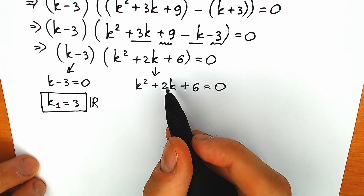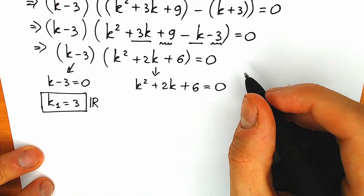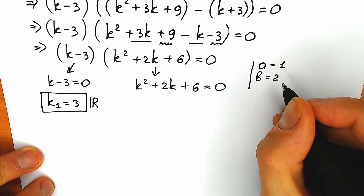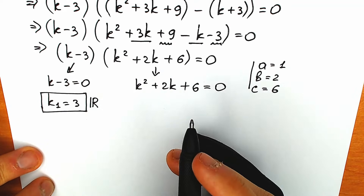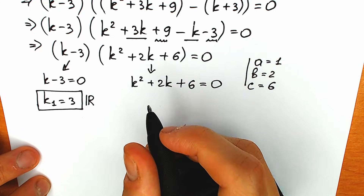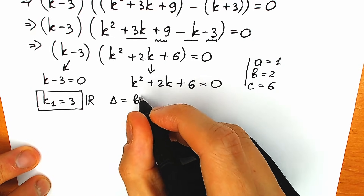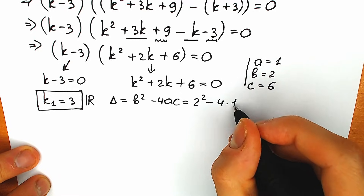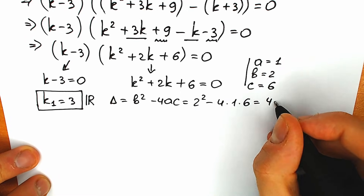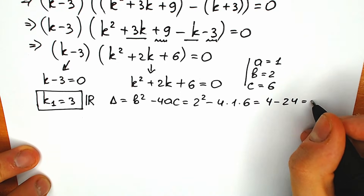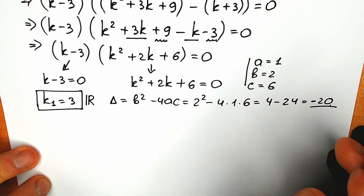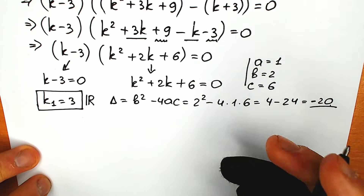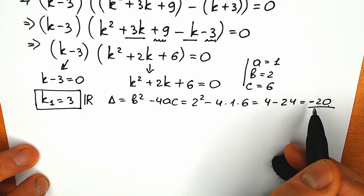For the quadratic branch, maybe we have two more roots. Let's use the discriminant method with a equals 1, b equals 2, c equals 6. Discriminant equals b squared minus 4ac equals 2 squared minus 4 times 1 times 6 equals 4 minus 24 equals minus 20. Our discriminant is negative. This means we don't have real number roots here, but we do have two complex roots.